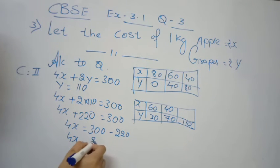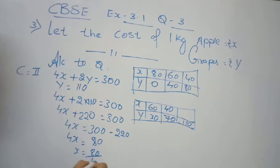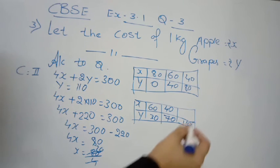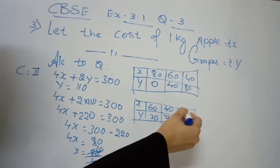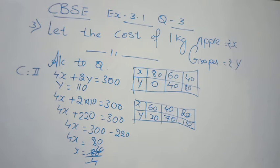Next, when y equals 110: 4x plus 2 into 110 equals 300, giving 4x plus 220 equals 300, so 4x equals 80 and x equals 80 upon 4, which equals 20. So when y is 110, x value is 20 rupees.